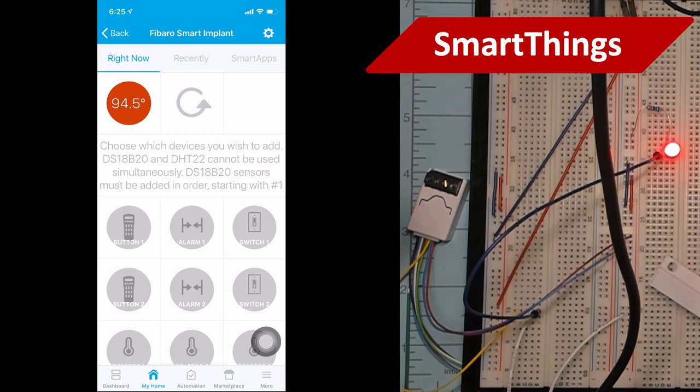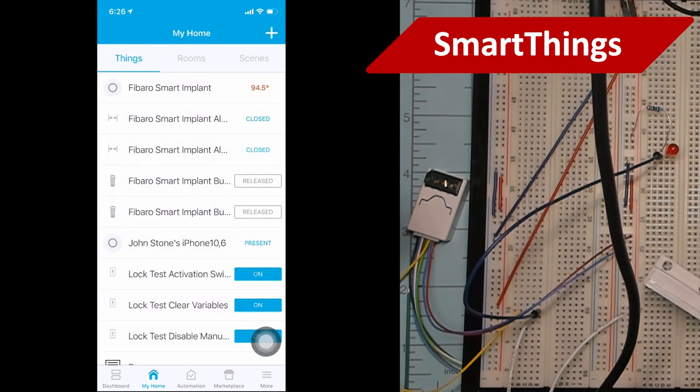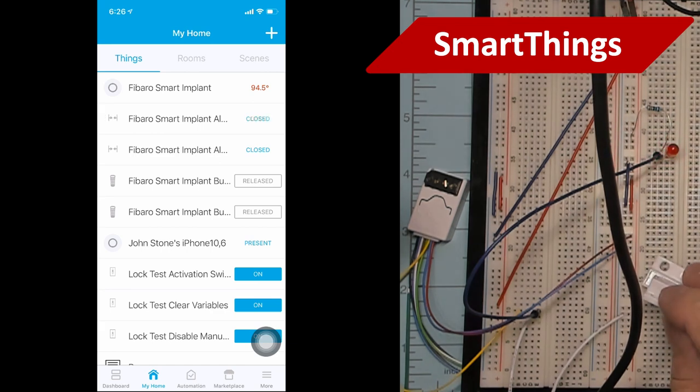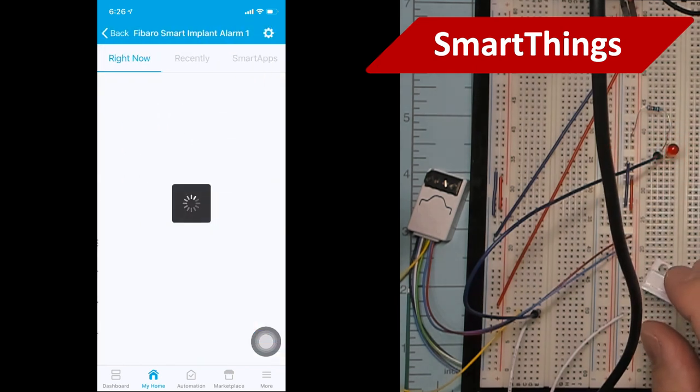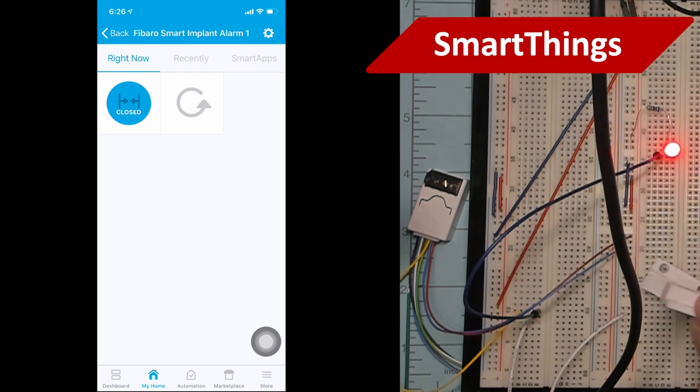Now you might be thinking that you can test this contact sensor from this main page. Well, you can't. Changing the state of the contact does nothing here. Go back to the main page and then you can see the state changes from here on the Alarm One device. Or you can go into the device itself and watch it change there.